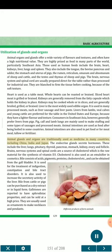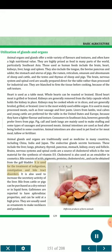Animal glands and organs are traditionally used as medicine in many countries, including China, India and Japan. The endocrine glands secrete hormones — these include the liver, lungs, pituitary, thyroid, pancreas, stomach, kidney, ovary and follicle. Brains, nervous systems and spinal cords are a source of cholesterol, which is the raw material for the synthesis of vitamin D3. Cholesterol is also used as an emulsifier in cosmetics. Bile consists of acids, pigments, proteins, cholesterol, etc., and can be obtained from the gallbladder. It is used for the treatment of indigestion, constipation and bile tract disorders. It is also used to increase the secretory activity of the liver. Bile from cattle or pigs can be purchased as a dry extract or in liquid form. Gallstones are reported to have aphrodisiac properties, and can be sold at a high price. They are usually used as ornaments to make necklaces and pendants.